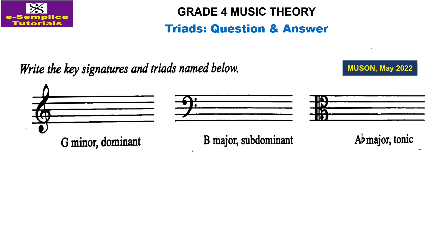This question is from Muzan exam May 2022. It says: write the key signatures and triads named below. The first one is G minor dominant. The second one is B major subdominant. And A flat major tonic. Let's do these together.